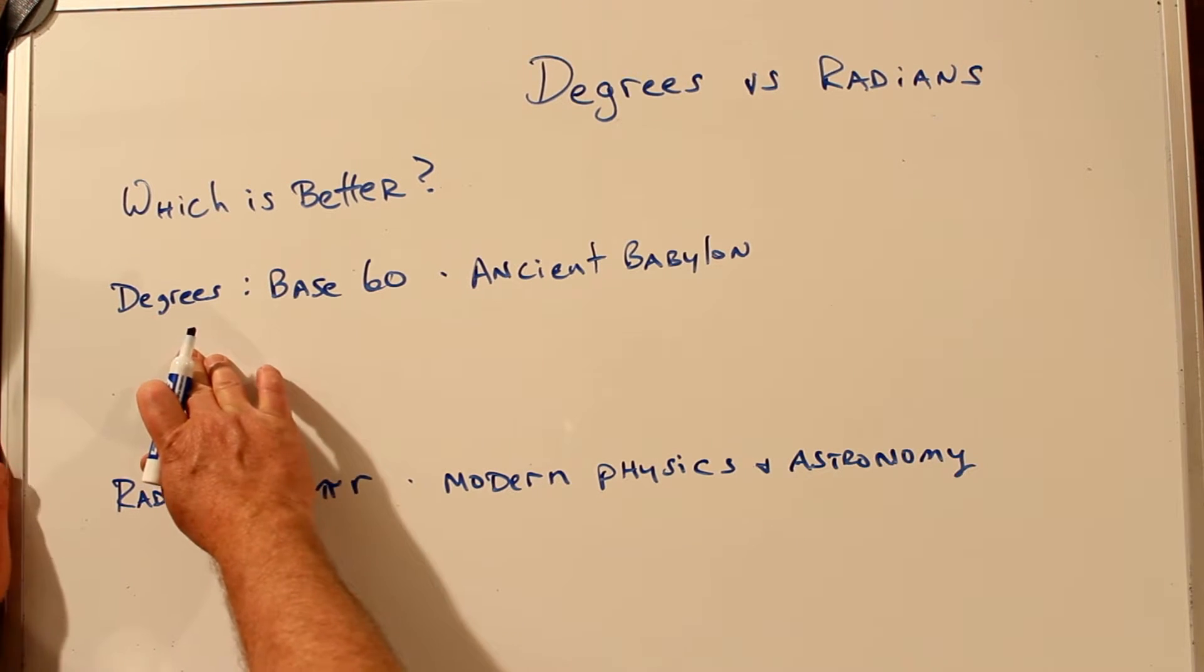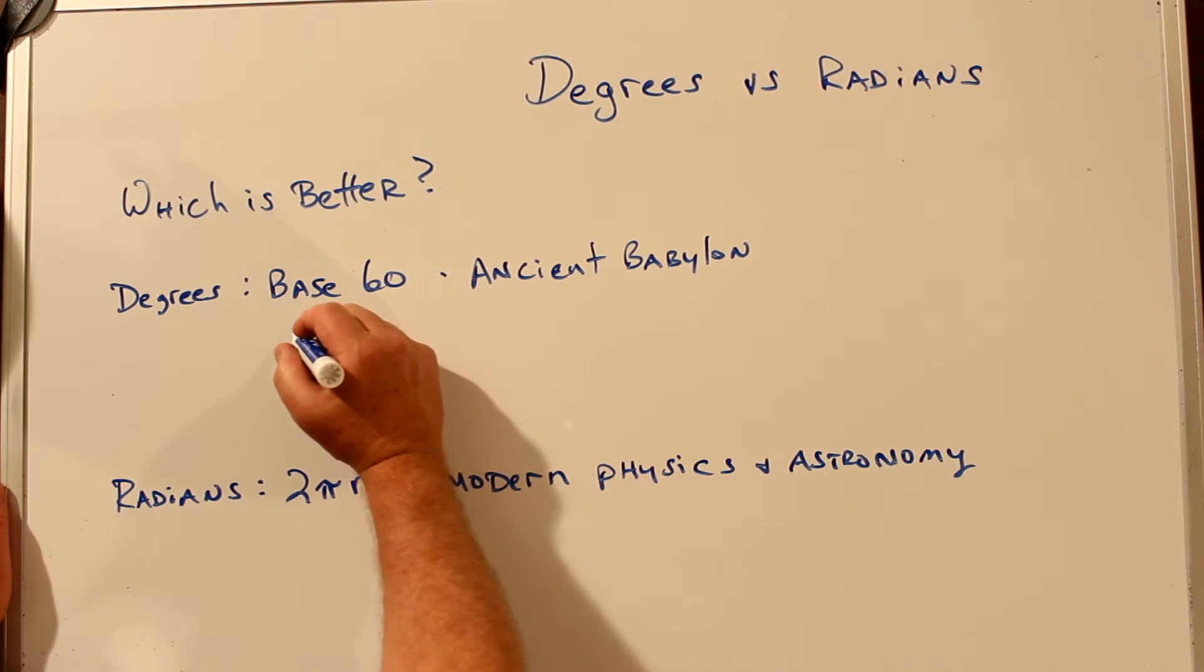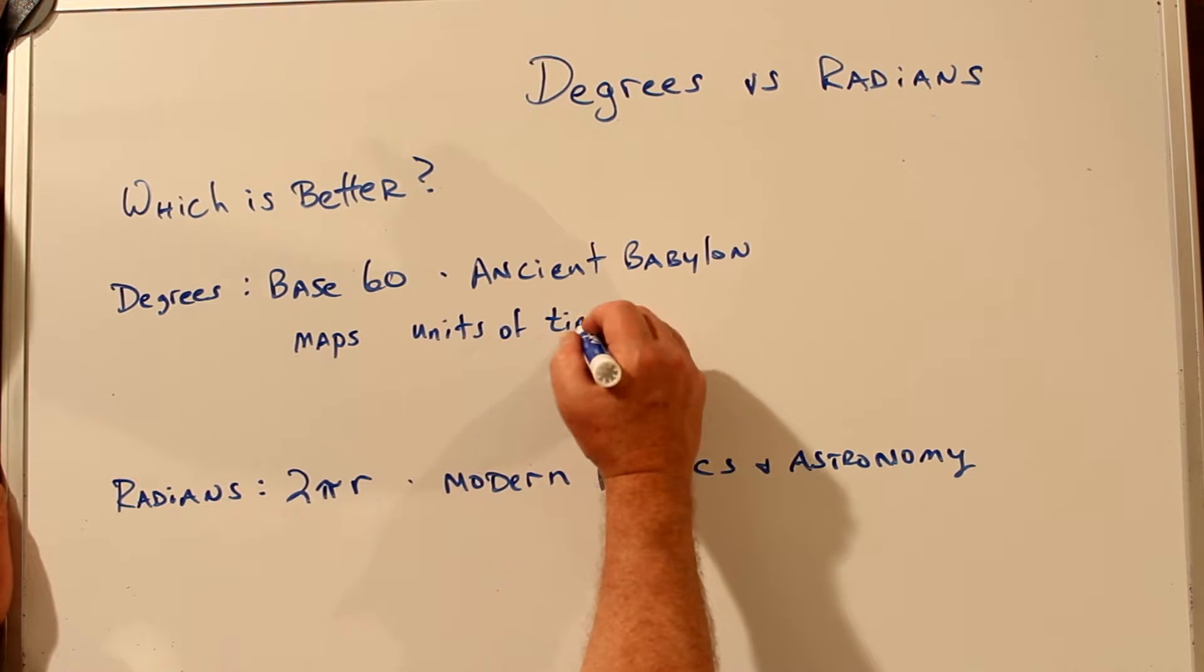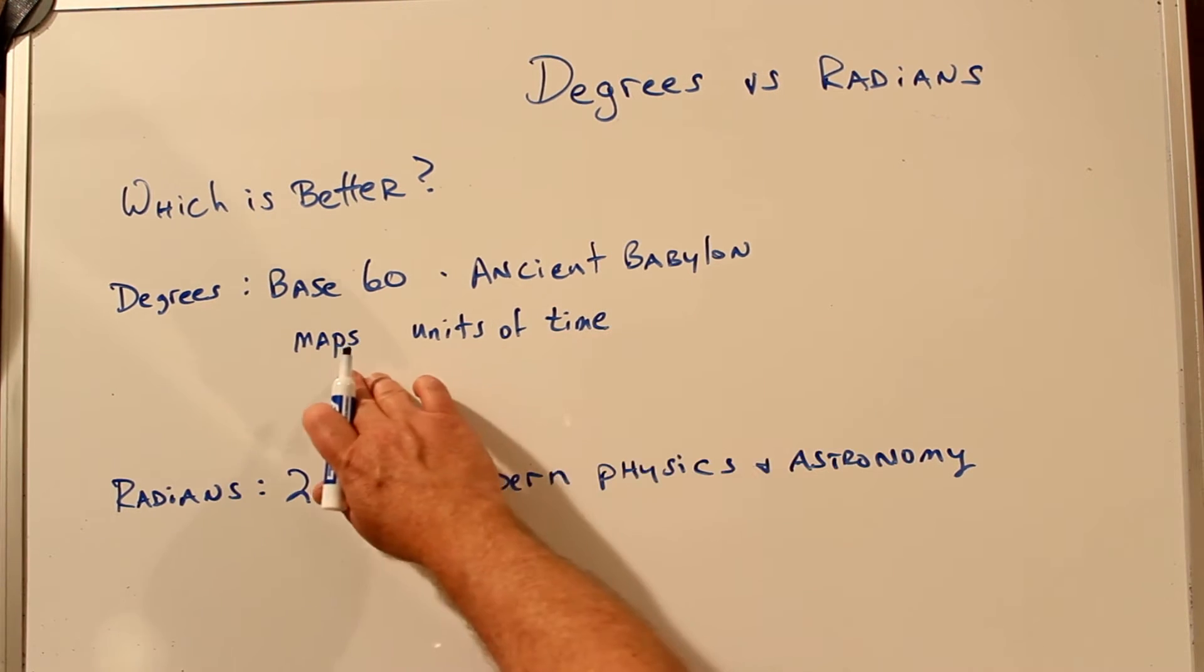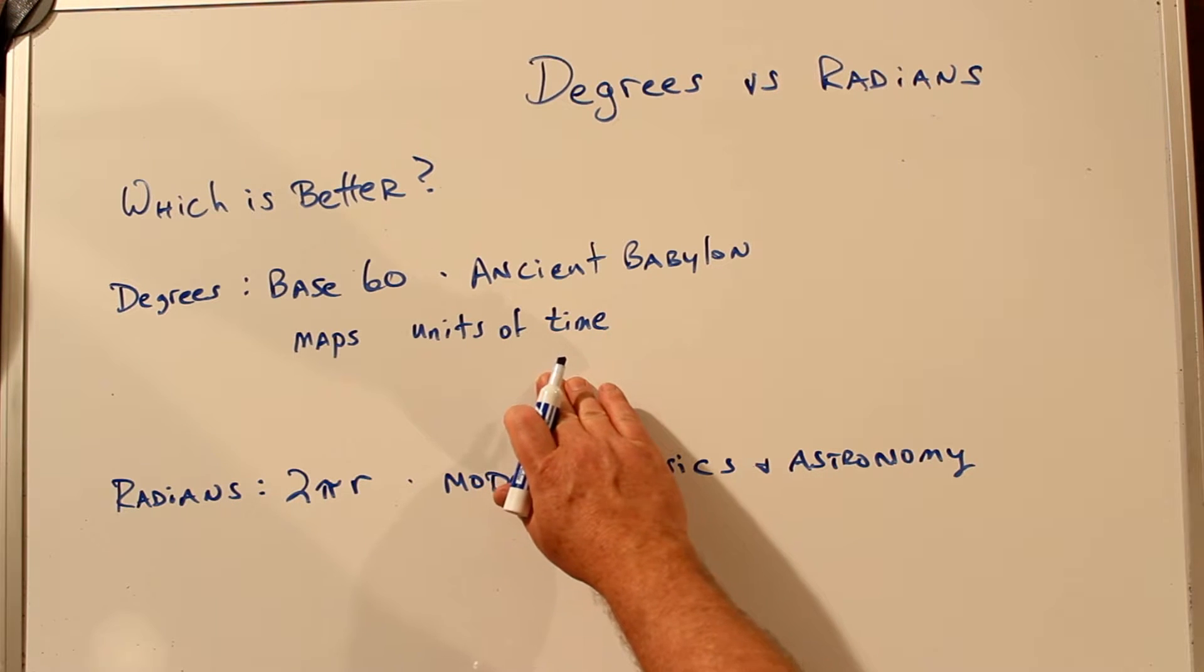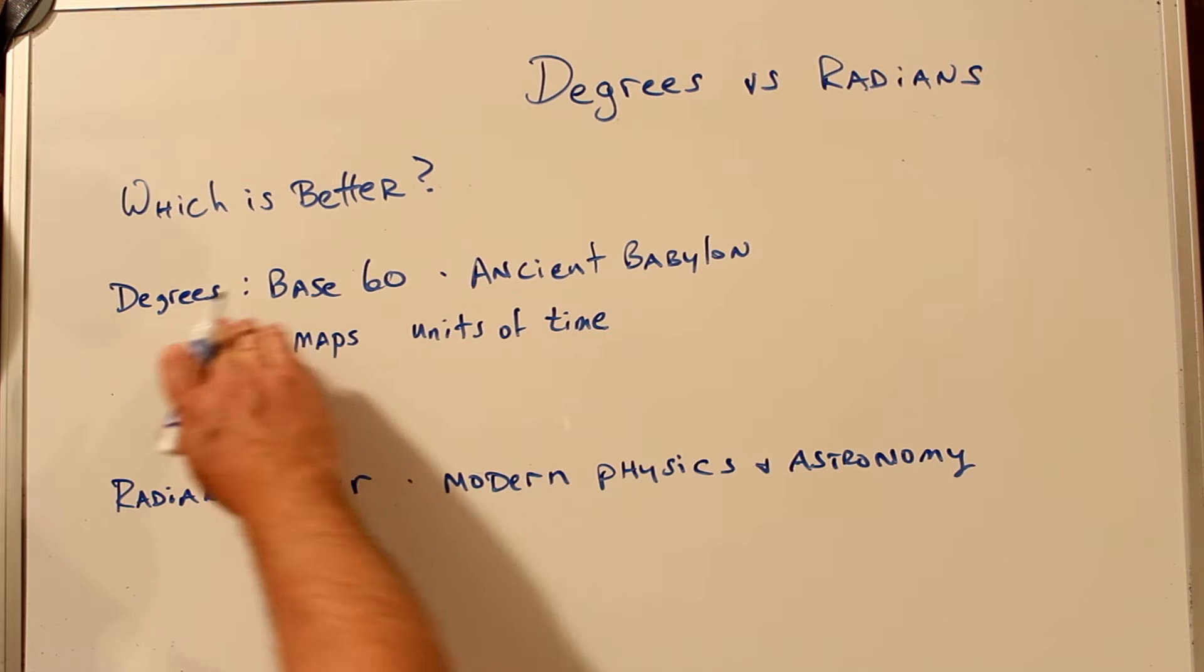Even though degrees is based on base 60 from ancient Babylon, all of our maps and units of time, and a number of other things, use degrees. So if you're using an existing map, an existing unit of time, or other things already in existence, you could argue degrees are better.